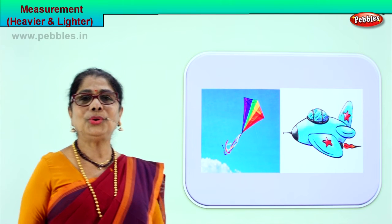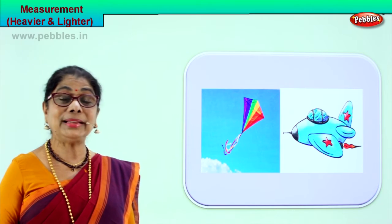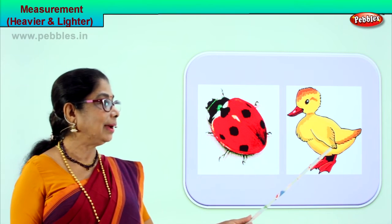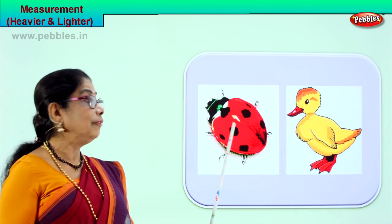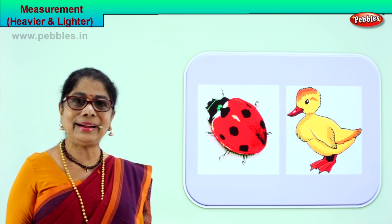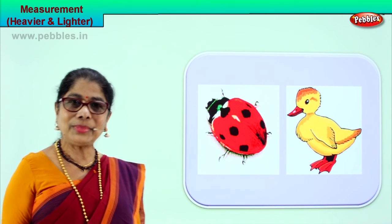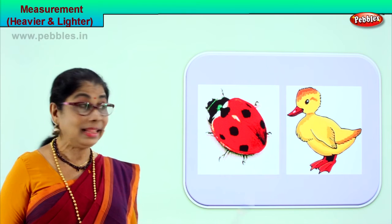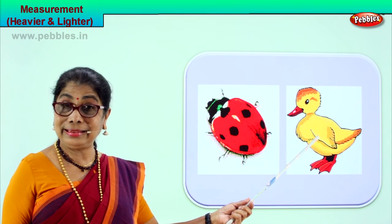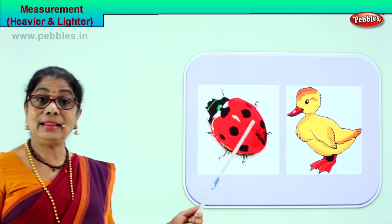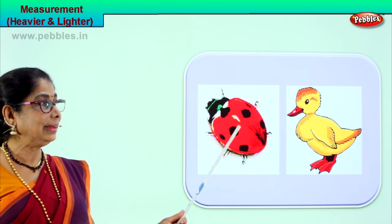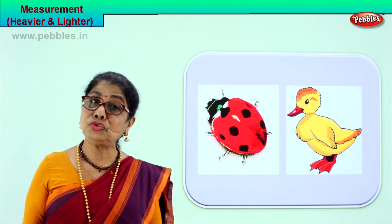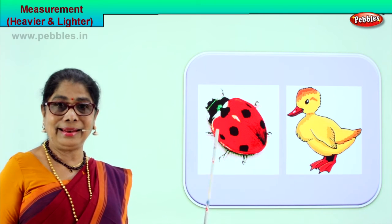Let's go to another picture and learn to understand heavier and lighter. You have a baby duckling and a ladybird. You find the ladybird in the garden — a tiny little insect. The ladybird insect is lighter than the duckling. The duckling is heavier than the tiny ladybird insect. I'm sure you understood the two measurements heavier and lighter.